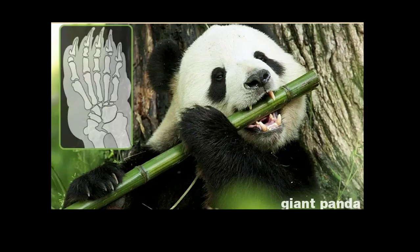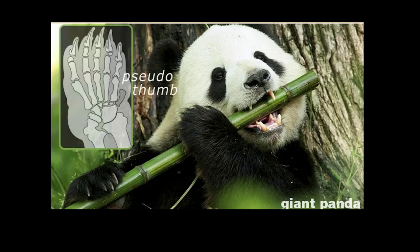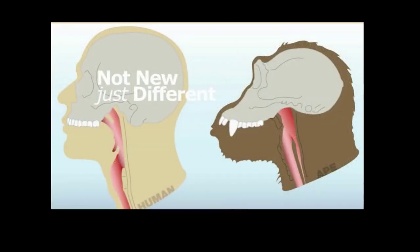Evolution often produces structures that are not perfectly suited for their use. The panda's thumb is actually an overgrown wrist bone. It doesn't function as well as our more complex jointed thumb, but it works well enough to allow the panda to grasp bamboo stalks. Not new, just different.